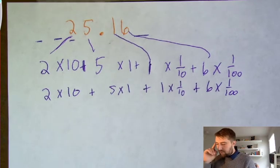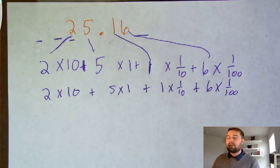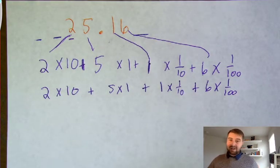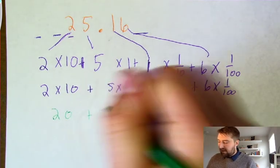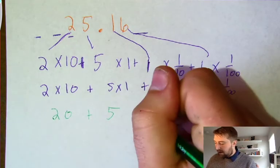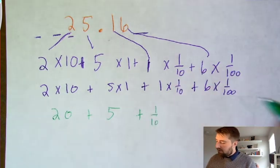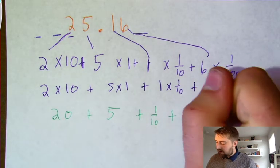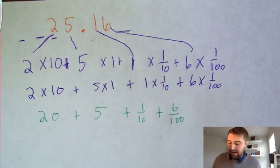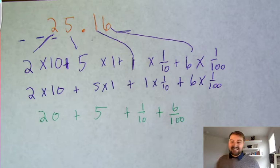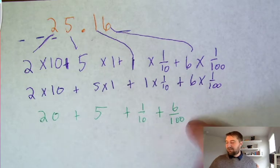We could put this into condensed form: two times ten is twenty, plus five times one is five, plus one times one-tenth is one-tenth, plus six times one-hundredth is six-hundredths. But since today is an asynchronous class and everybody's watching this video, we're not going to do that step together—we'll stop with the expanded form.